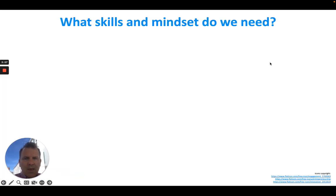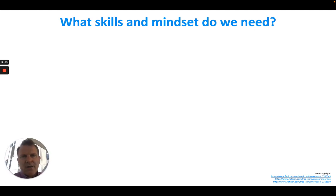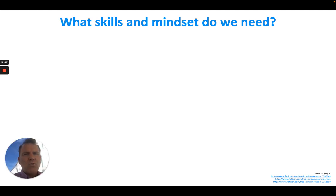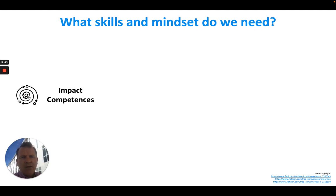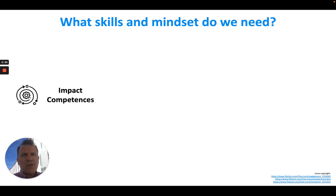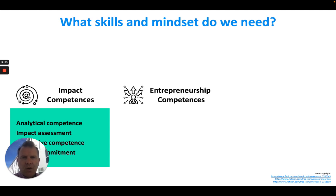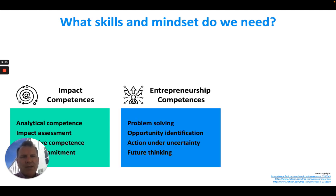In the first step we have talked to all the different Aurora partners to identify what social entrepreneurship and innovation contains — and to be very clear, this is not limited to business or management. What we have here is three dimensions that every student at the Aurora University should be able to learn: impact competencies, entrepreneurship competencies, and engagement competencies.